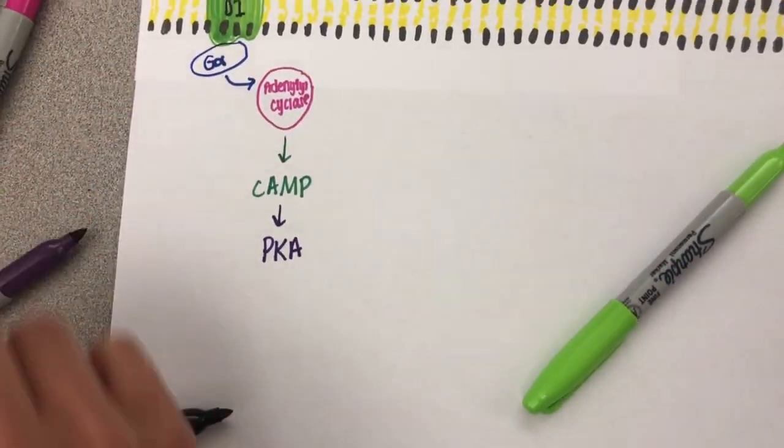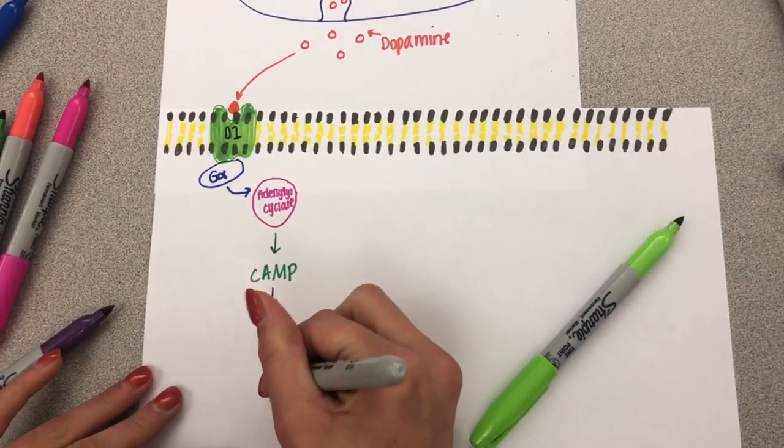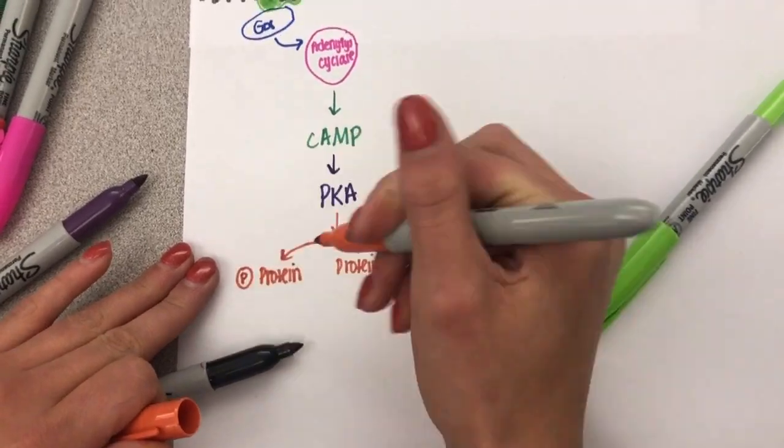cAMP induces activation of PKA, which phosphorylates a protein which then expresses cav1, resulting in excitability.